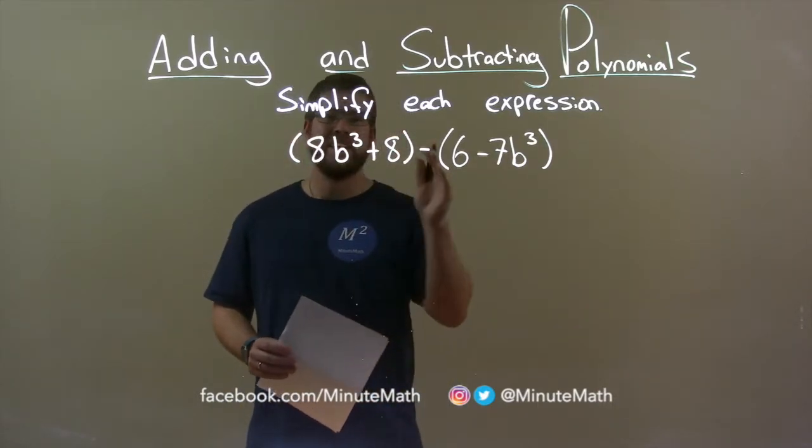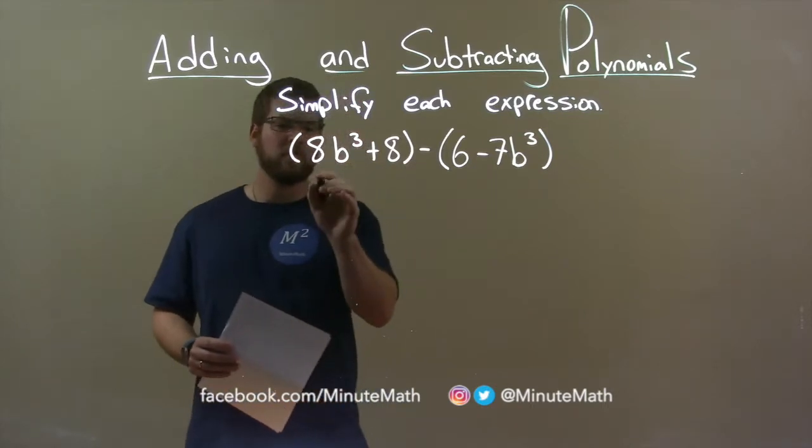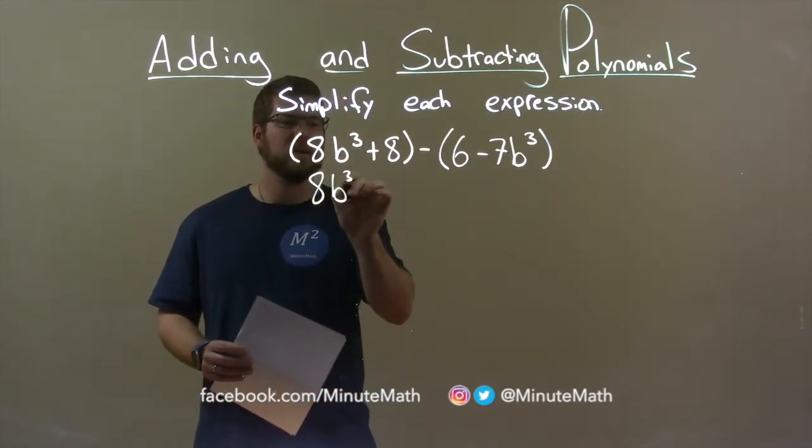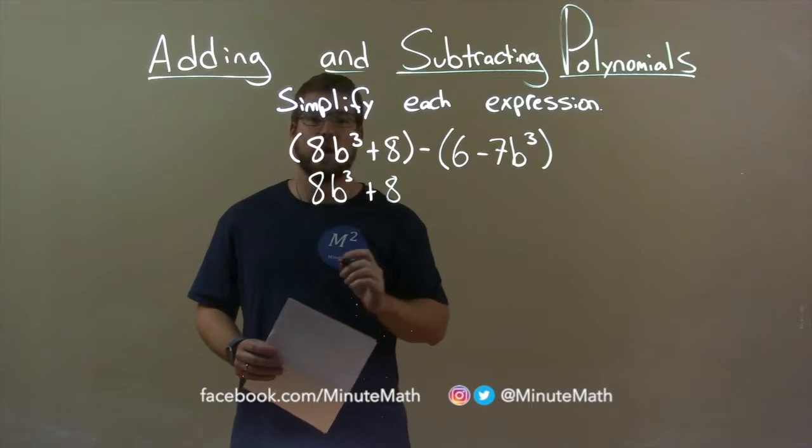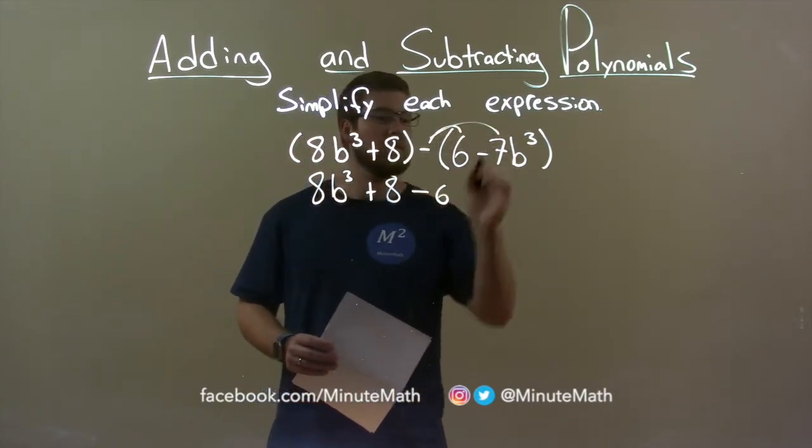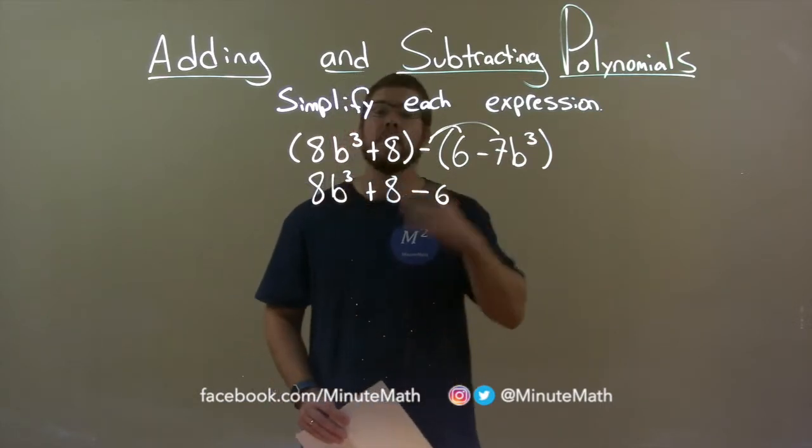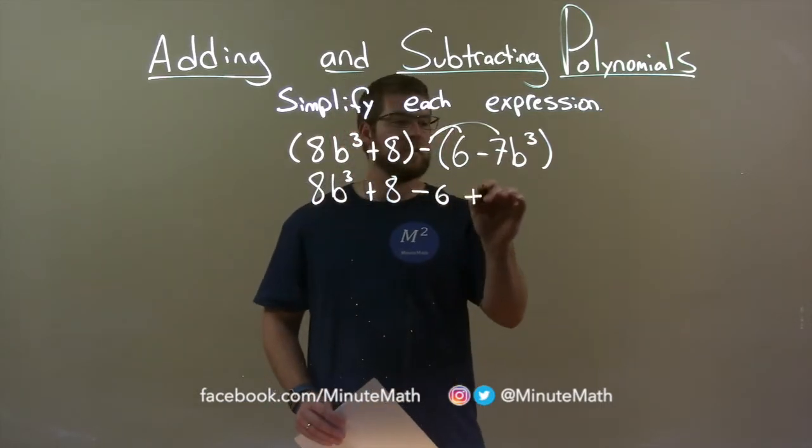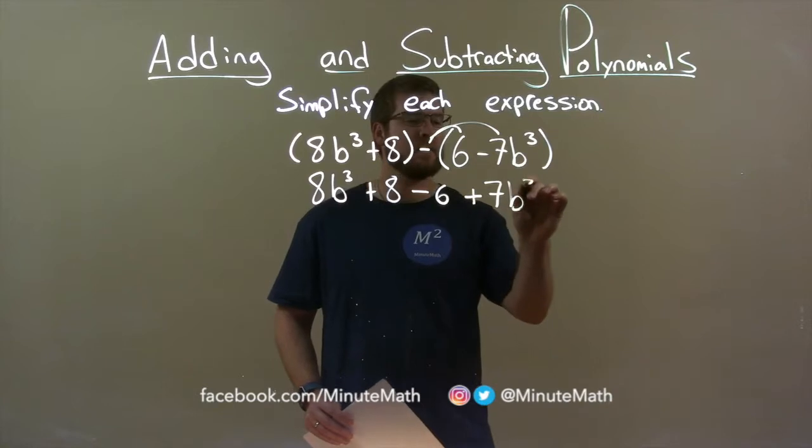I then look at this minus sign, and I'm going to distribute that. So in front of it, 8b to the third plus 8 can just come down. We distribute the minus sign, and we have a minus 6, and make sure we go to both parts here, and we have a double negative. That's a positive, so we have a positive 7b to the third.